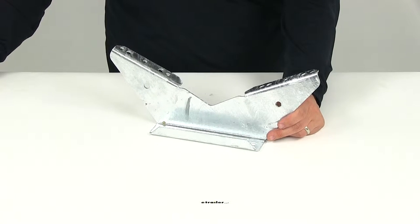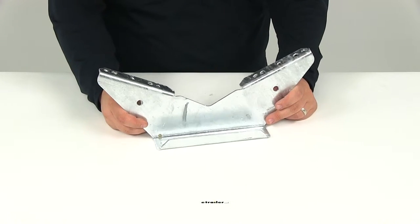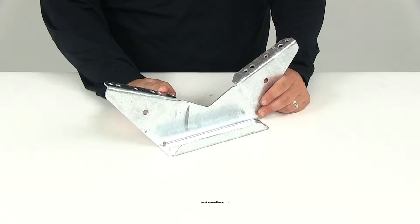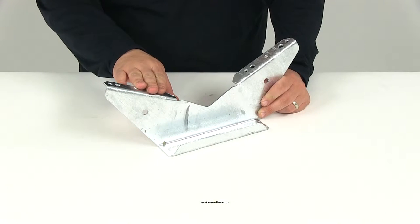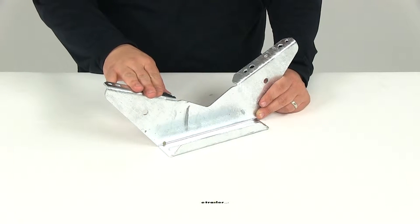The heavy-duty bracket mounts to your pontoon boat trailer's frame or crossmember and allows you to mount two bunk boards. This will stabilize the bunk boards when used with another bracket at the other end of the pontoon.